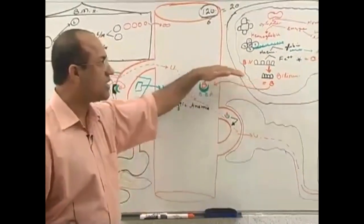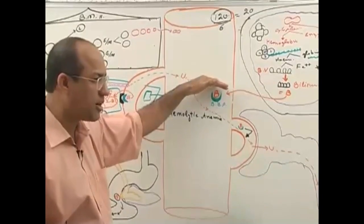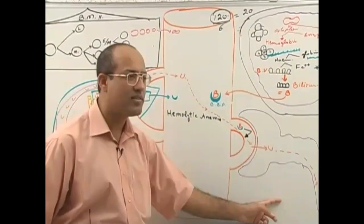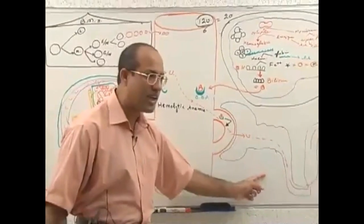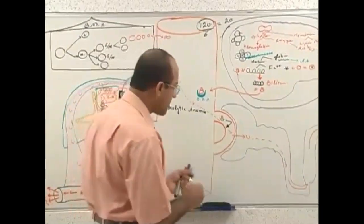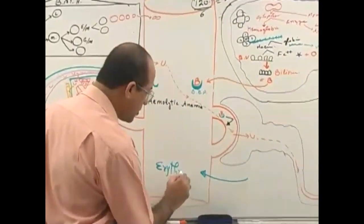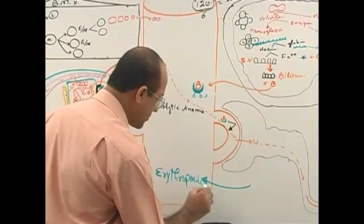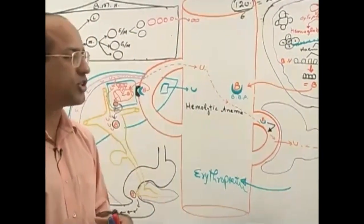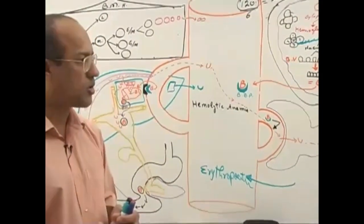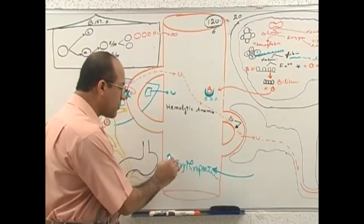When hemoglobin level goes down, oxygen transport to the kidney is slightly reduced. In response to reduced oxygen supply, the kidney produces a substance called erythropoietin. Whenever oxygen supply to the kidney is reduced, the kidney produces an extra amount of erythropoietin, so the patient's level of erythropoietin will go up in the blood.